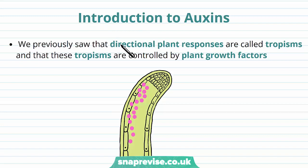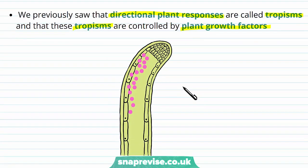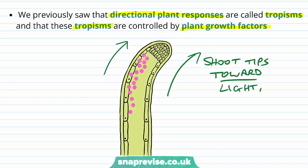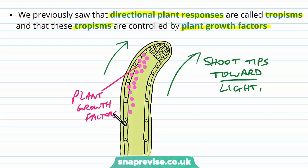We saw in a previous video that directional plant responses are known as tropisms, and that these tropisms are controlled by molecules called plant growth factors. One example is that shoot tips grow towards the light, and this is governed by the release of particular chemical factors, which are plant growth factors, which act upon different tissues inside the plant.